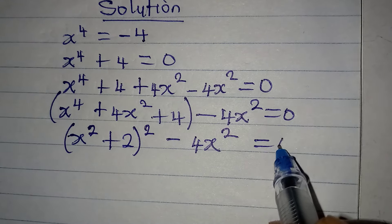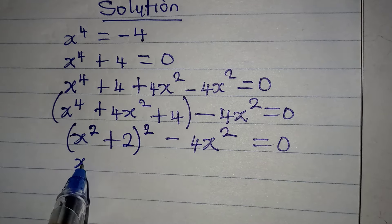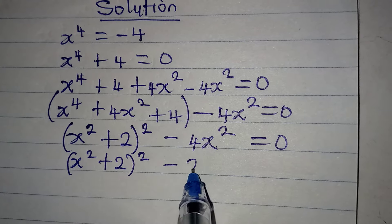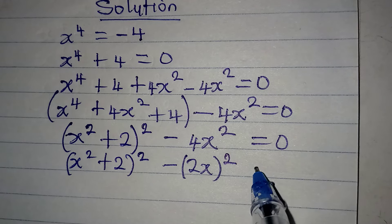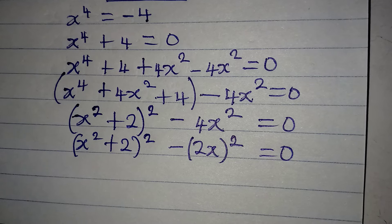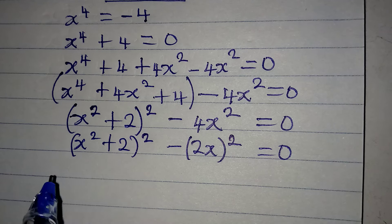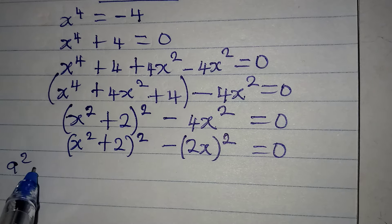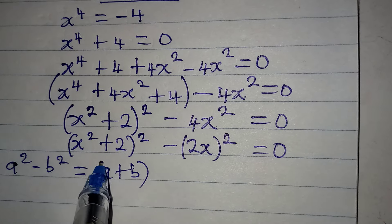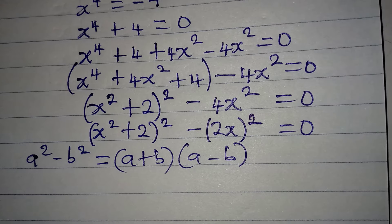So I'm going to have x squared plus 2, the whole thing squared, minus 2x squared, equal to zero. This is simple because I can apply the difference of two squares. From this standard, if you have a squared minus b squared, this is the same thing as a plus b, times a minus b.